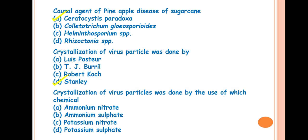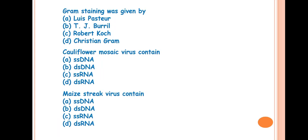The next question is, crystallization of virus particle was done by the use of which chemical? The answer is ammonium sulfate. So by Stanley in 1935, he used this chemical ammonium sulfate for the crystallization of virus.